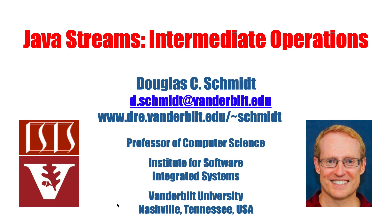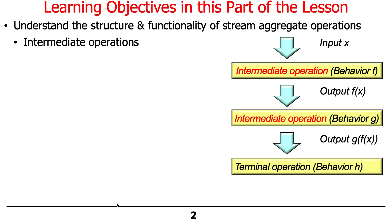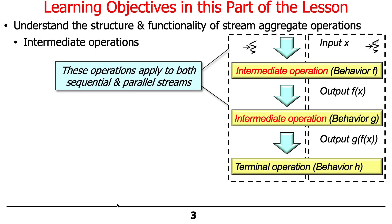Let's start talking about intermediate operations in more detail. You've already seen kind of what they do. They sit between the source and the terminal operation and they can have various behaviors — either transforming, reducing, or filtering the various elements as they flow through a stream.